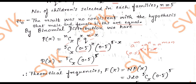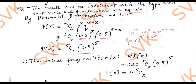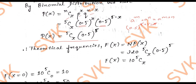We need to find the expectation values. According to theoretical frequency, f(x) is defined by N into p(x). The N value is 320, so f(x) = 320 * 5Cx * 0.5^5. Simplifying, 0.5^5 * 320 equals 10. Therefore, theoretical frequency f(x) = 10 * 5Cx.